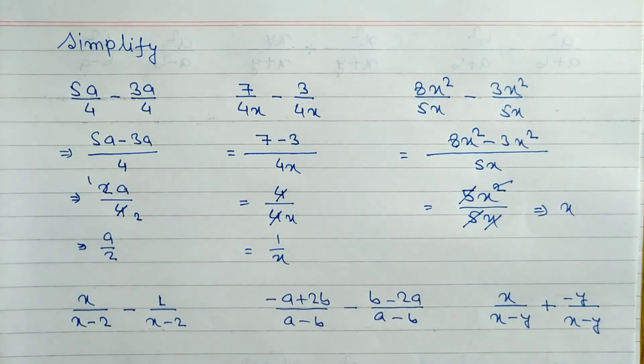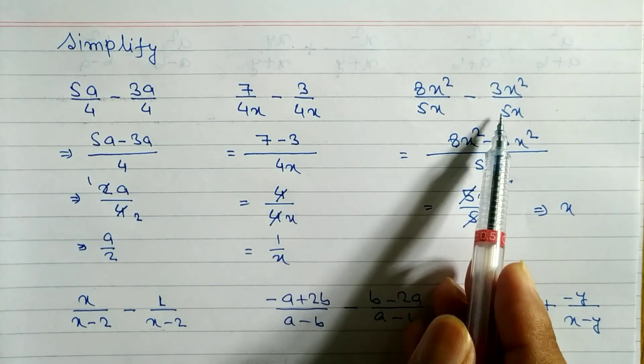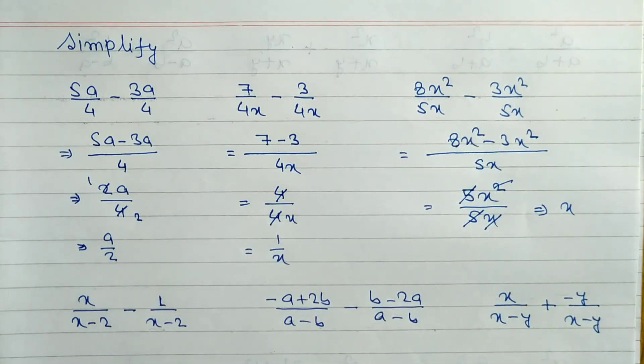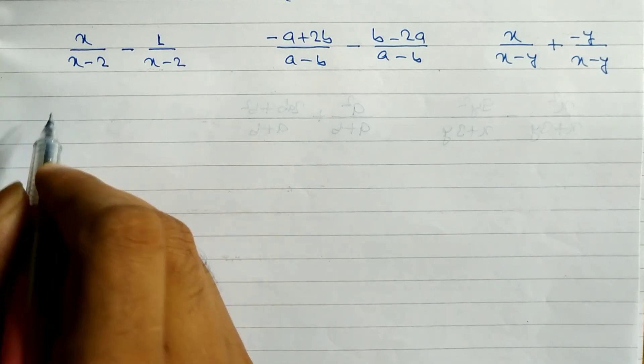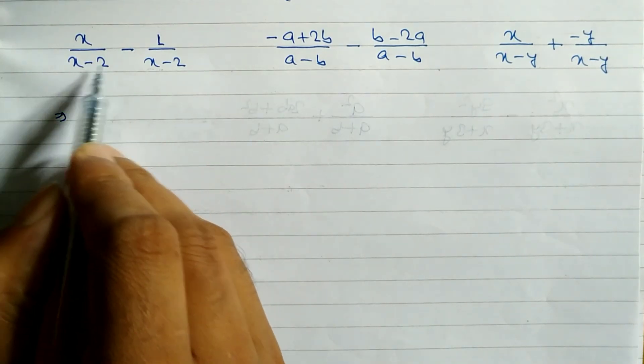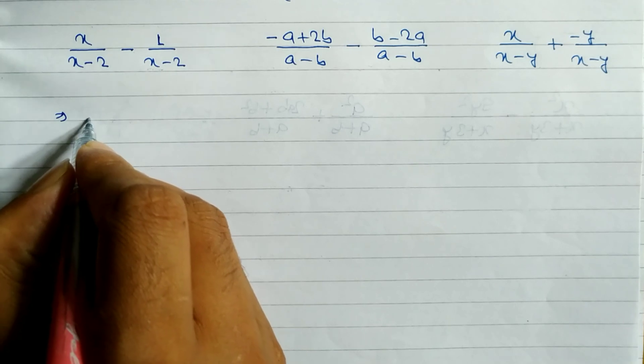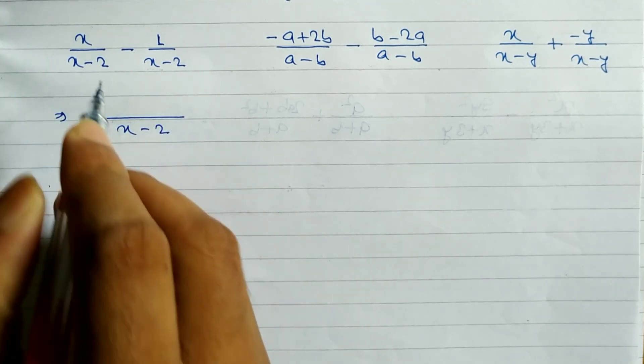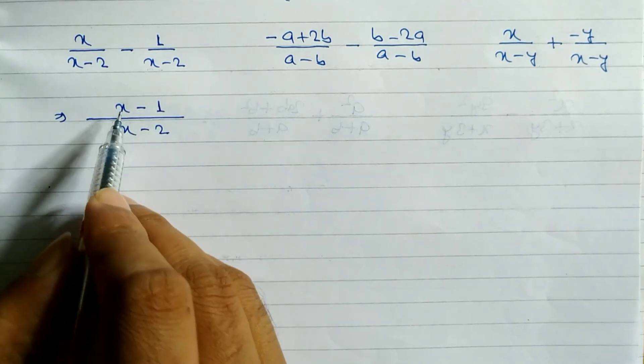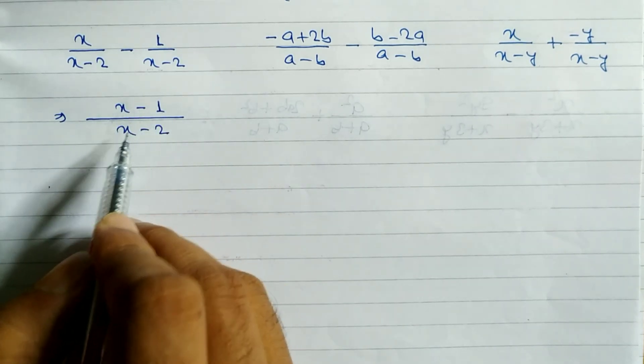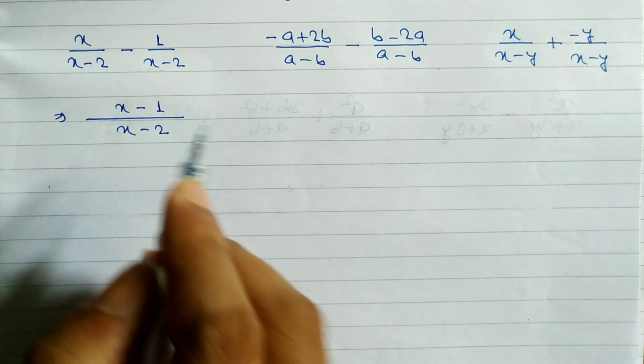Hope you understand up to here. I will teach you when the denominator is not same, then how to simplify too. You can see the other questions here. Again denominator is same: x minus 2, x minus 2. So we take LCM x minus 2, and write down the numerator only. So x minus 1 is the answer. We cannot subtract further because these are unlike terms.